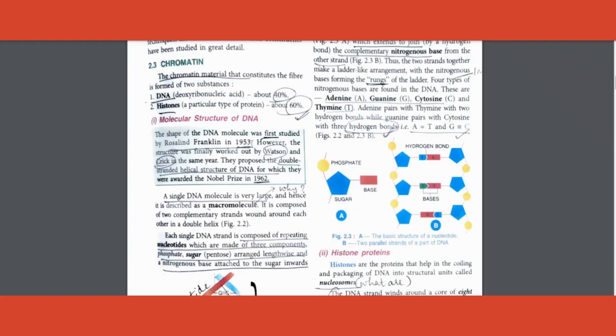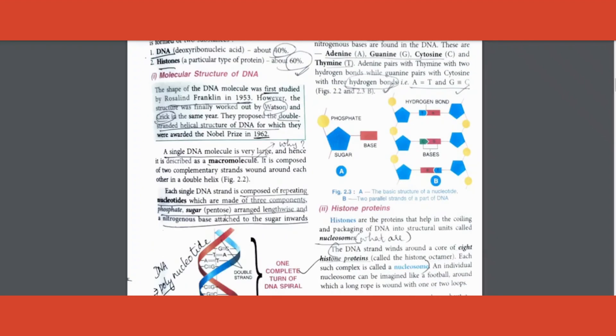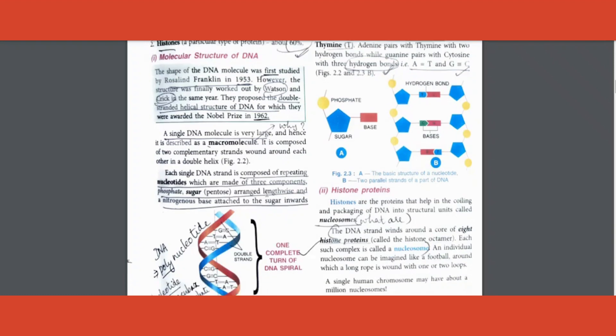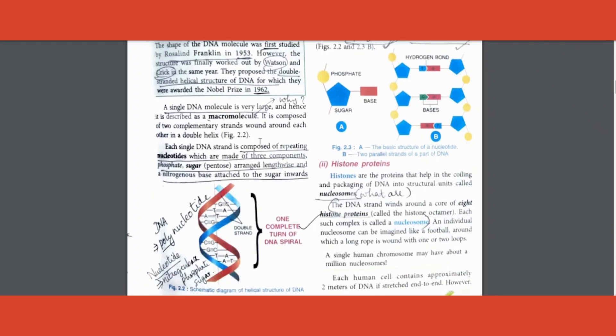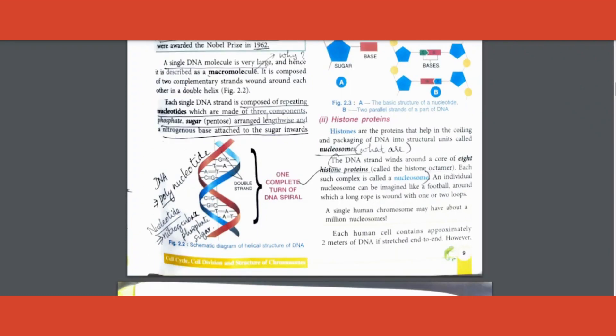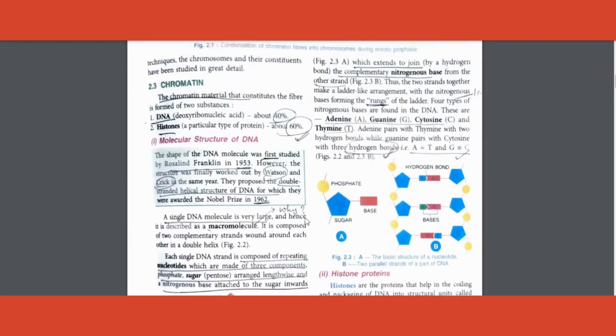Next question is why is DNA called a macromolecule? The reason is because it's a single molecule having a large nucleotide chain. DNA is a polynucleotide in other words, and it is composed of three things - phosphate, sugar and nitrogenous bases. That much you should know for that two mark question.